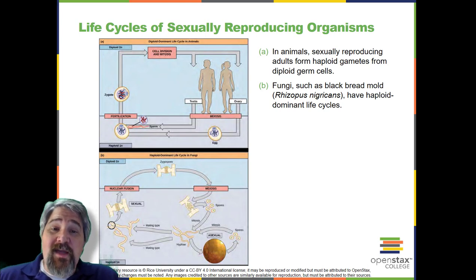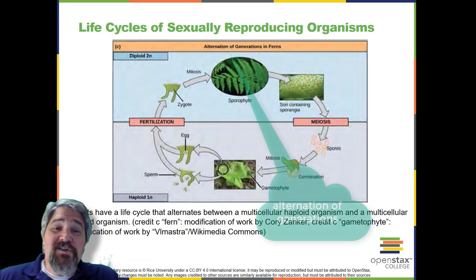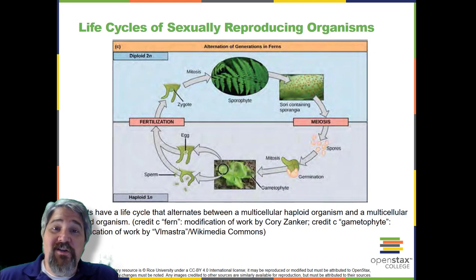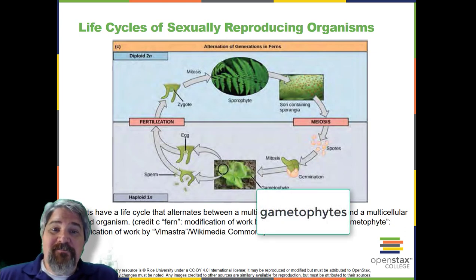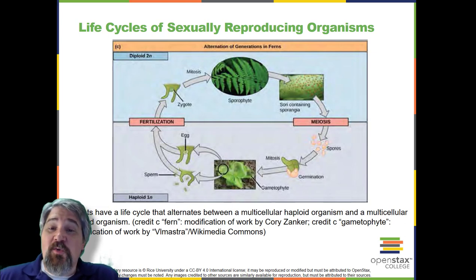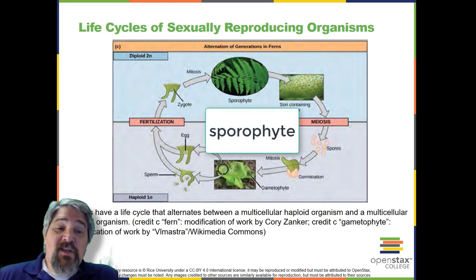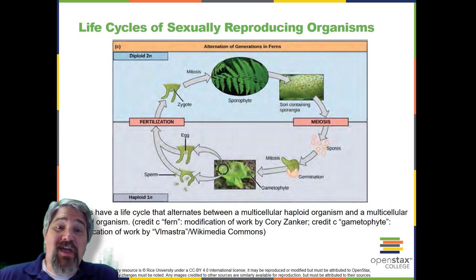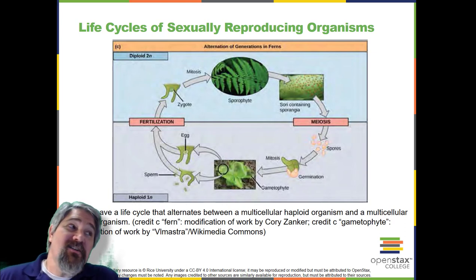The third life cycle type, employed by some algae and all plants, is called alternation of generations. These species have both haploid and diploid multicellular organisms as part of their life cycle. The haploid multicellular plants are called gametophytes because they produce gametes. Meiosis is not involved in the production of gametes in this case, as the organism that produces gametes is already haploid. Fertilization between the gametes forms a diploid zygote. The zygote will undergo many rounds of mitosis and give rise to a diploid multicellular plant called a sporophyte. Specialized cells of the sporophyte will undergo meiosis and produce haploid spores, which will develop into gametophytes, as depicted here in this slide.